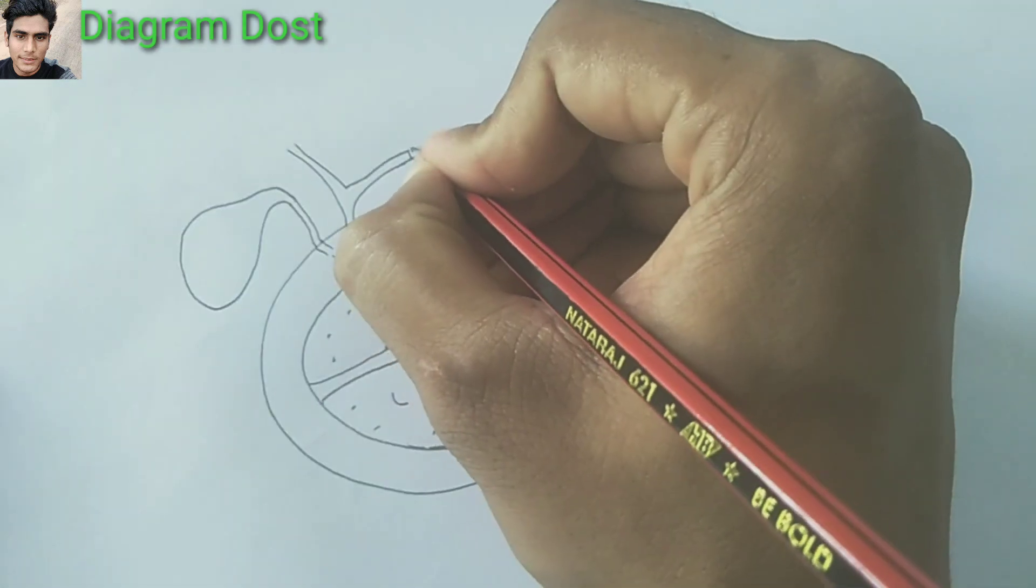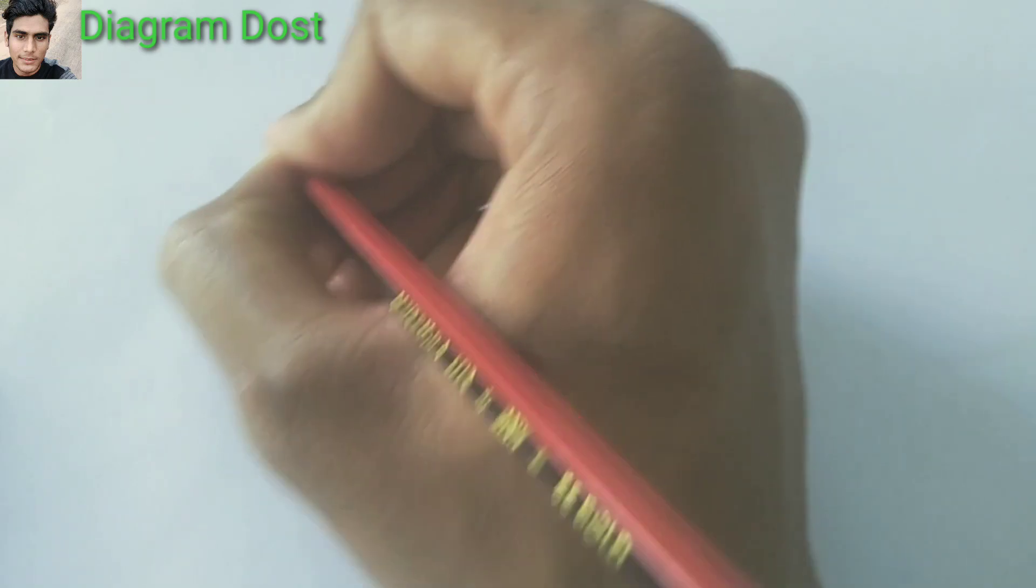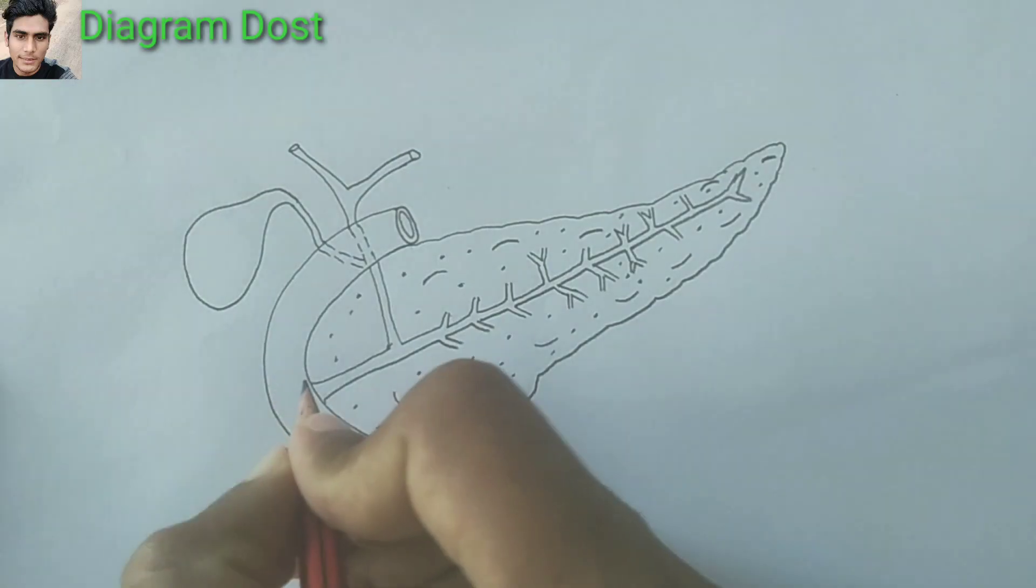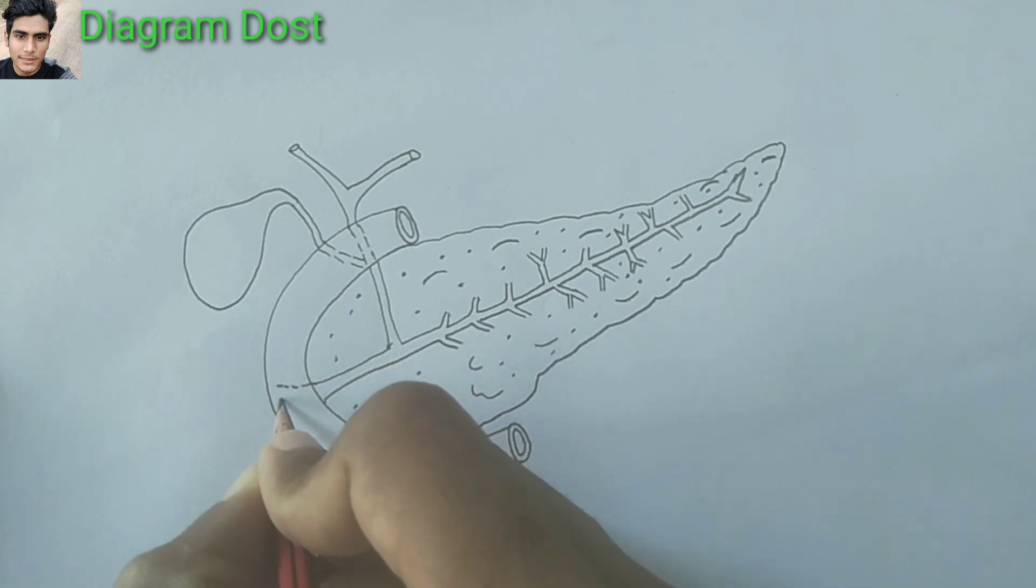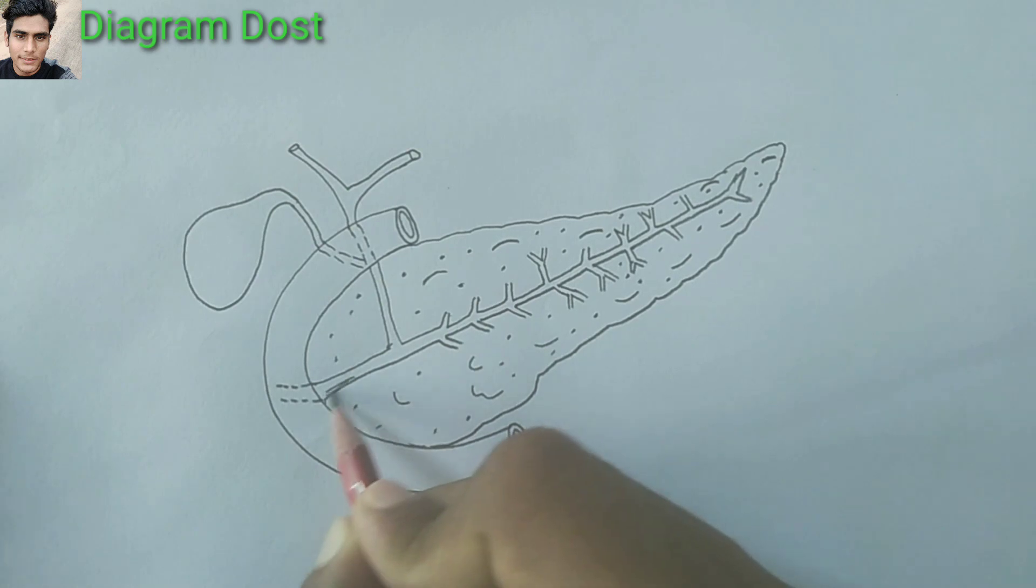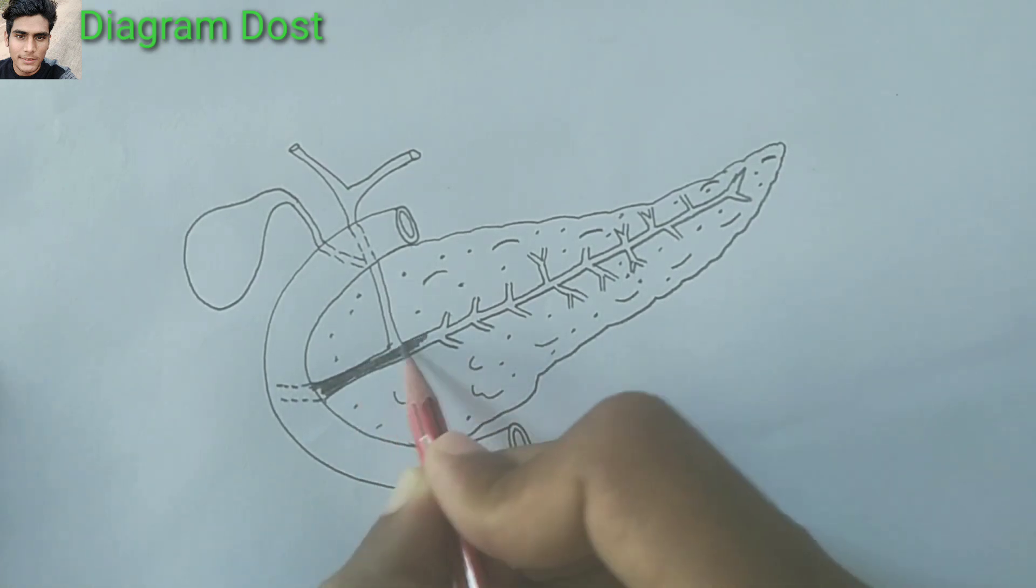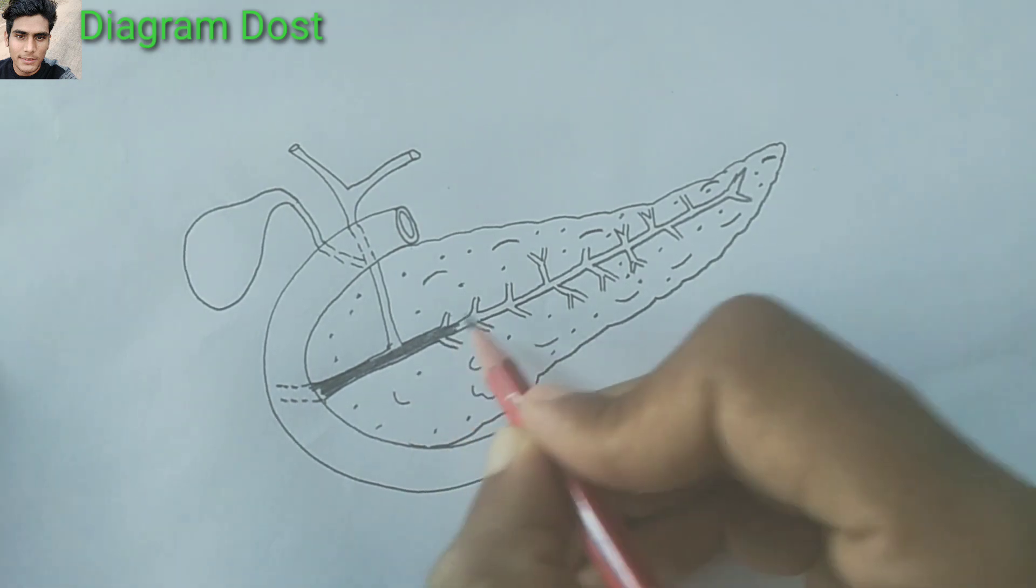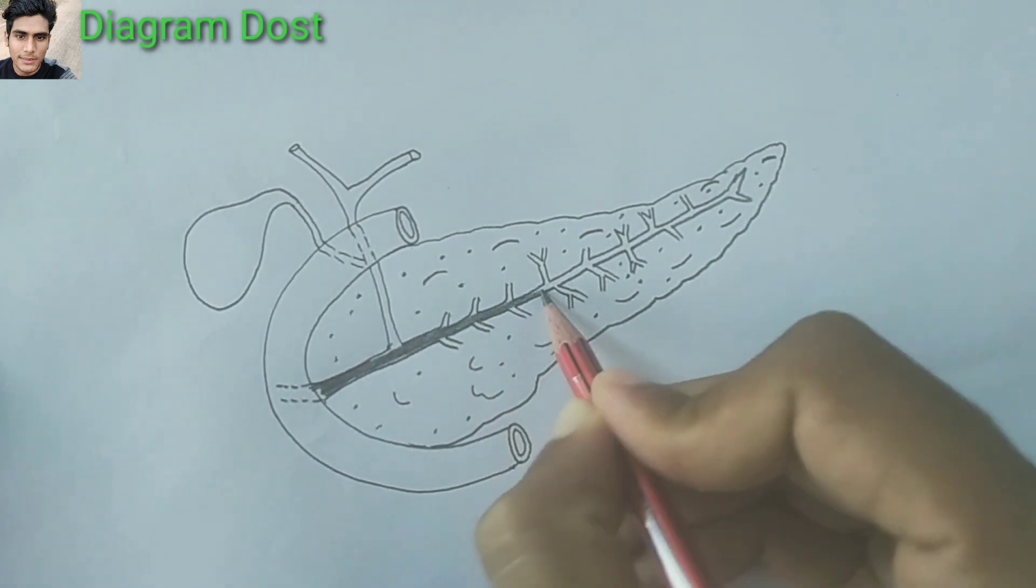The diagram is almost ready. This structure is known as ampulla of Vater. Now I am making this pancreatic duct darker, showing that pancreatic juice is present in it.